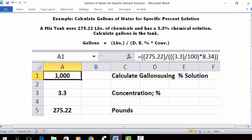Go to a blank spreadsheet, put your cursor in C1, and type this description: 'Calculate gallons using percent solution.' Then put your cursor in A1 and set it as whole numbers with commas for every thousand, bold and centered.